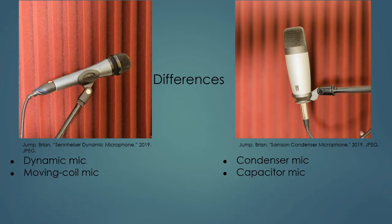As for their names: the microphone that works off of electromagnetic induction is known as a dynamic mic, sometimes called a moving coil mic. The one that works off of variable capacitance is known as a condenser mic — which is a bit of a misnomer, a holdover from the past. It's actually a capacitor microphone, but no one refers to them as capacitor microphones, so if you go to a store you'll have to ask for a condenser mic.